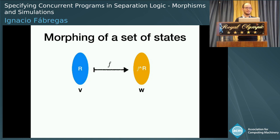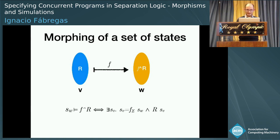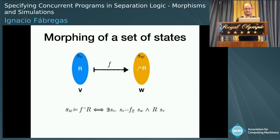Before presenting the rule, I need to give another definition of how we morph a set of states. If we have a set of states R in V and we want to transform it into a set of states F-R in W, the idea is quite simple: we say that a state is going to be in F-R if and only if there exists another state in R such that it is the image with respect to the morphism.